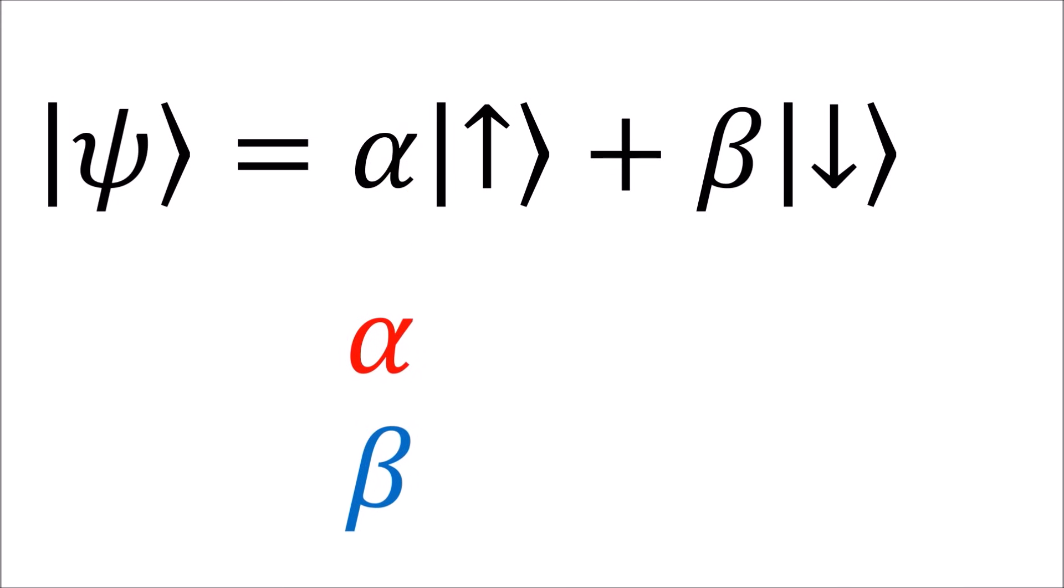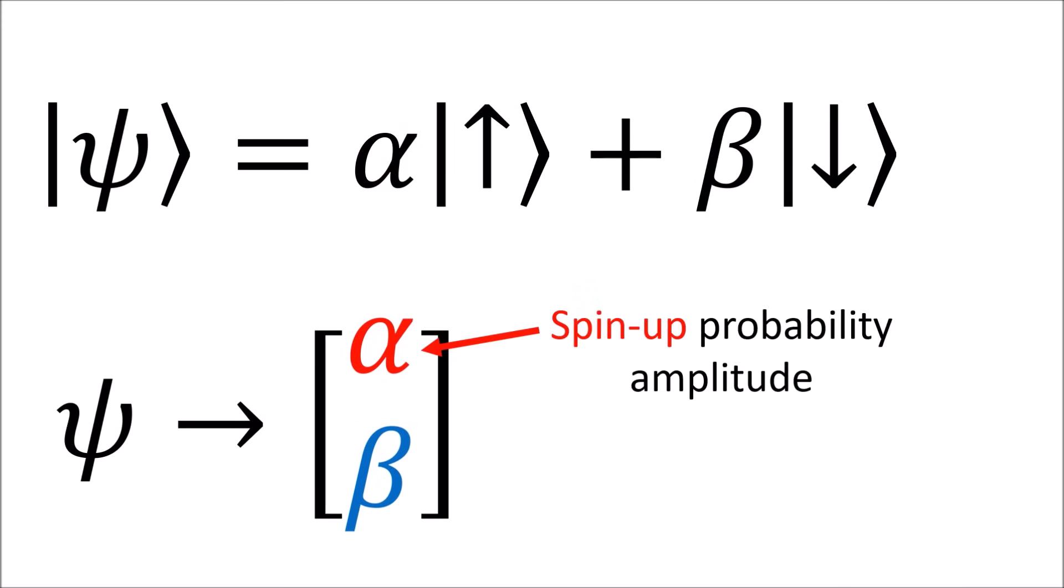We can write a spinor as a two-component column, where the two components indicate the probabilities for measuring spin up or spin down from a given quantum state.